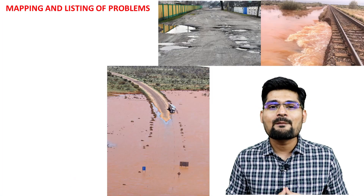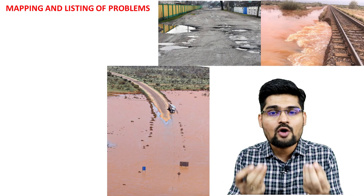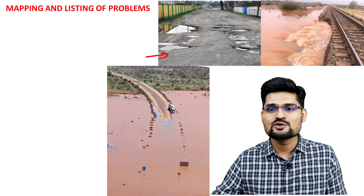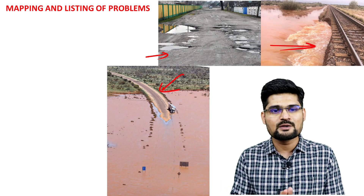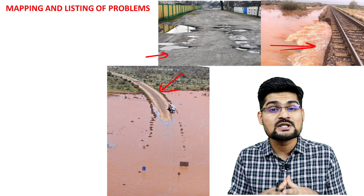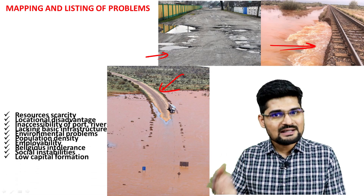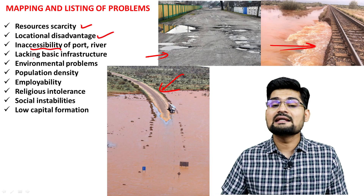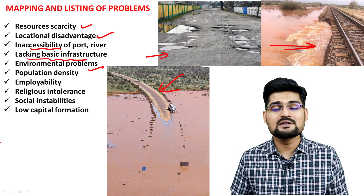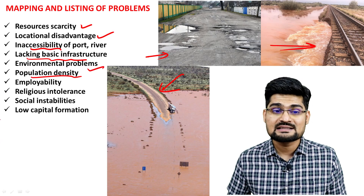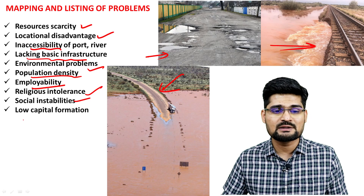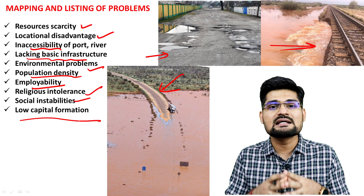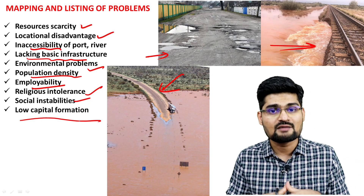Step three is mapping and listing problems of particular areas. Examples include road connectivity issues, rail connectivity issues, and flood area problems — these are hurdles for regional development. Specific problems to list include resource scarcity, locational disadvantage of particular areas, inaccessibility, lacking basic infrastructure, environmental issues, population density, employability, religious intolerance, social inabilities, and low capital formation.